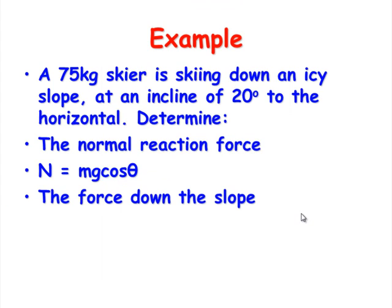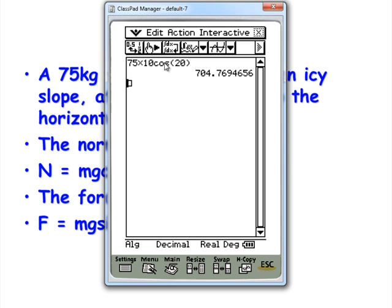Let's have a look at the force down the slope. Down the slope was M G sin theta. So again, if we look at punching in those values, we get M G sin theta. It's a vector component. The force down the slope is 256.5 newtons.